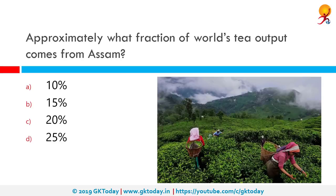Approximately what fraction of the world's tea output comes from Assam? The correct answer is 15%, or about one-sixth of the tea produced in the world. Tea-growing districts include Tinsukia, Dibrugarh, Sivasagar, Jorhat, Golaghat, Nagaon, and Sonitpur. Assam produces more than 50% of the tea produced in India and one-sixth of the world's tea.